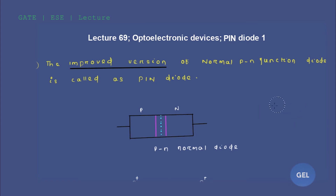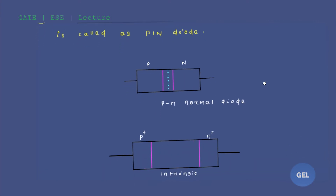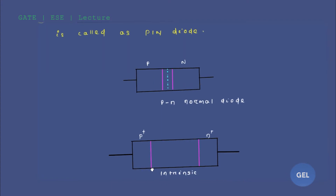In the case of a PIN diode, we again take an intrinsic semiconductor and start doping with a higher concentration of acceptor impurity up to a certain point to form a p-plus region. After that point, we leave the entire middle portion as intrinsic. Then we start doping from the other region with a higher amount of donor impurity to form an n-plus region.